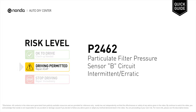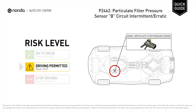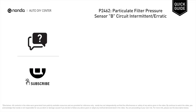P2462 is a diagnostic trouble code for particulate filter pressure sensor B circuit intermittent or erratic. Under this circumstance, short distance driving is permitted but your vehicle should be repaired ASAP. It means the PCM has detected a voltage input signal from the circuit of the DPF pressure sensor known as B.